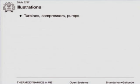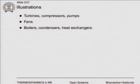Typical examples: turbines, compressors, pumps — these are used in power plants, in refrigeration industries — fans, boilers, condensers, heat exchangers. All of these are used in various engineering applications.